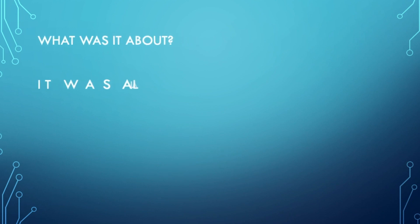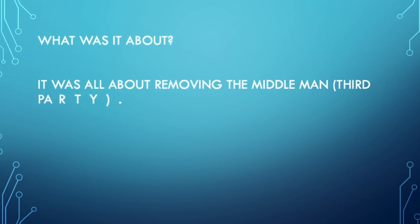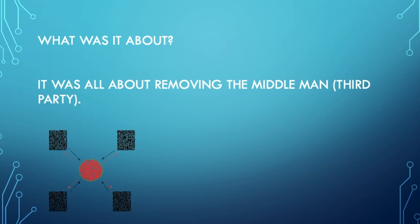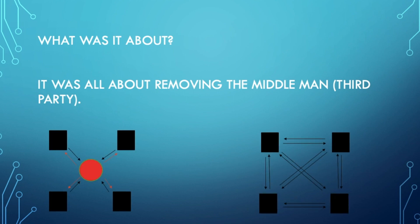What was it about? It was all about removing the middle man. You can see the red dot in the figure on the left representing the middle man.